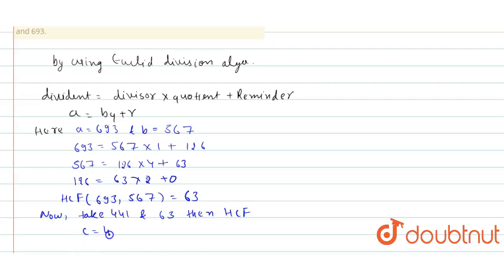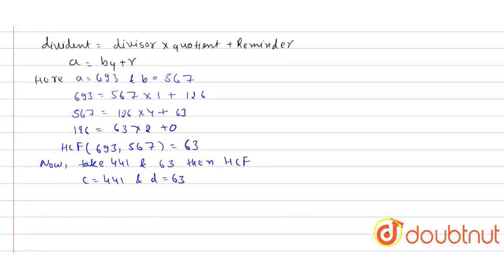Then HCF will be, if we take C equals 441 and D equals 63, then 441 equals 63 multiply with 7 plus 0. So that's why our HCF for 693, 567, 441 will be 63. I hope you understood, thank you.